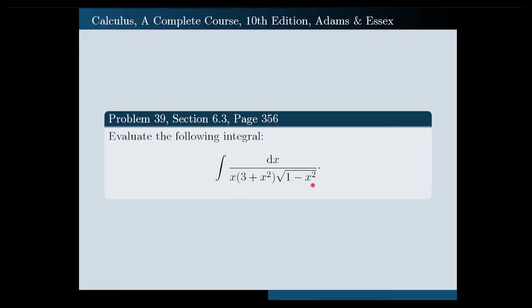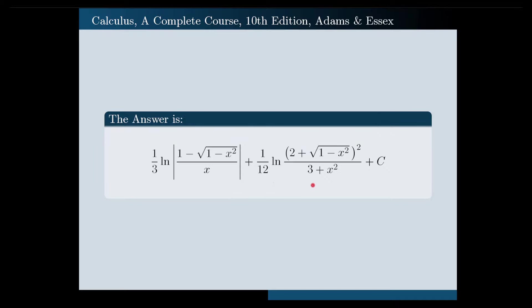If you do your calculations correctly, one possible answer that you might get is as follows: 1 over 3 ln of absolute value of 1 minus square root of 1 minus x squared all over x, plus 1 over 12 times ln of 2 plus square root of 1 minus x squared squared all over 3 plus x squared, plus a constant c.